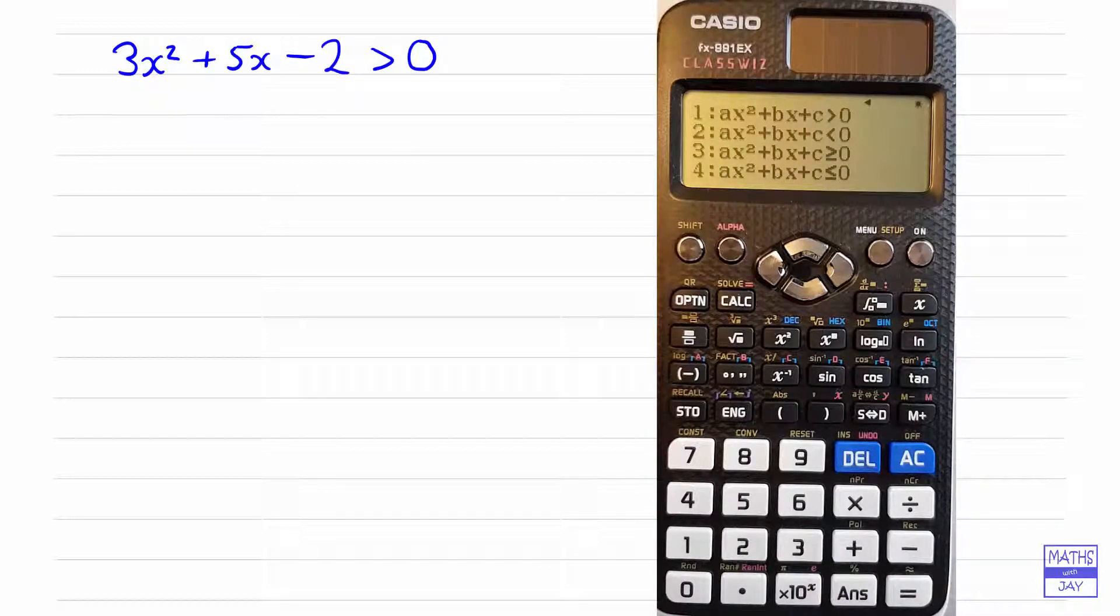If you've had a cubic, if the biggest power of x was a 3, then you would have selected 3 and so on. And then we look at the sort of inequality we've got. So we've got 0 on the right hand side and we've got a greater than symbol, so that's telling us we want number 1.